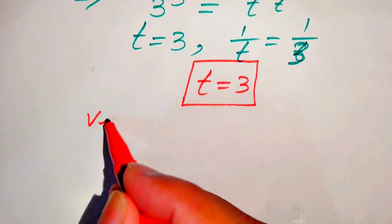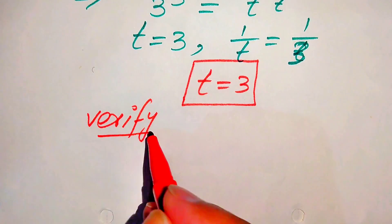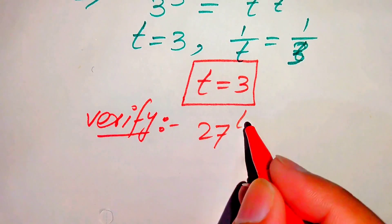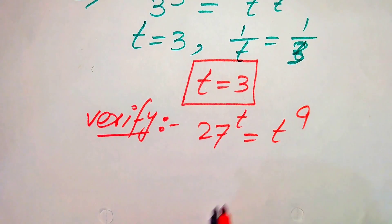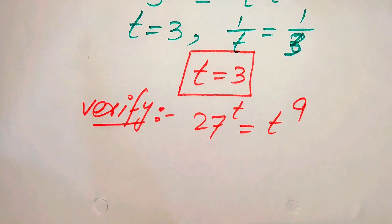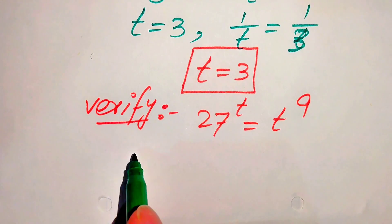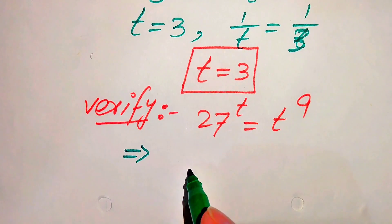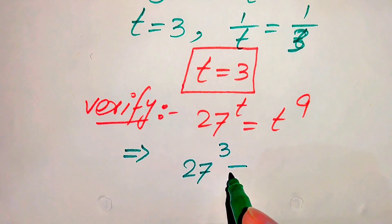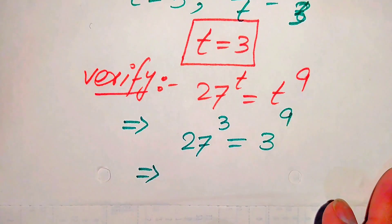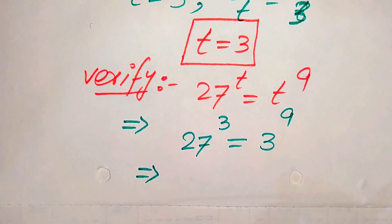In the next steps we need to verify this value of t. To verify, we copy down the given equation: 27 to the power of t equals t to the power of 9. We substitute t equals 3 on both sides and check whether both sides are equal. When we put t equal to 3, it becomes 27 to the power of 3 equals 3 to the power of 9. We do the working on one side and get both sides equal.